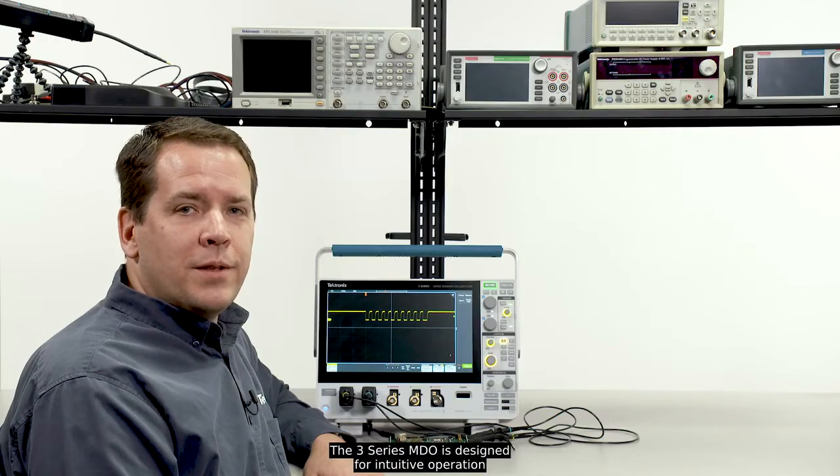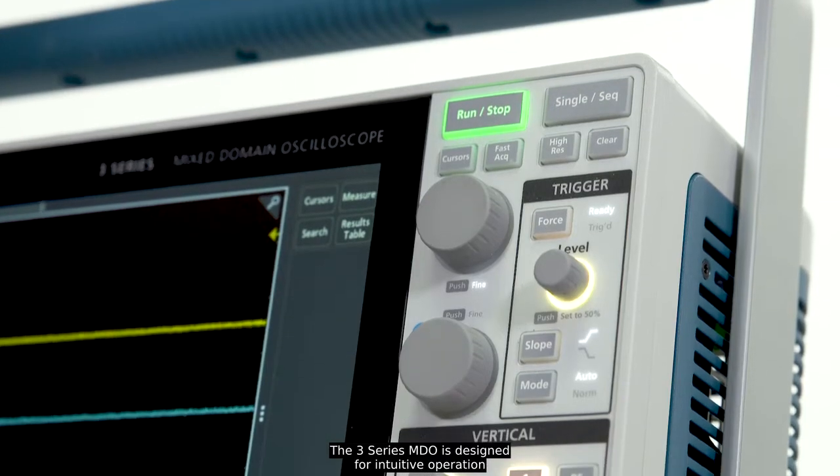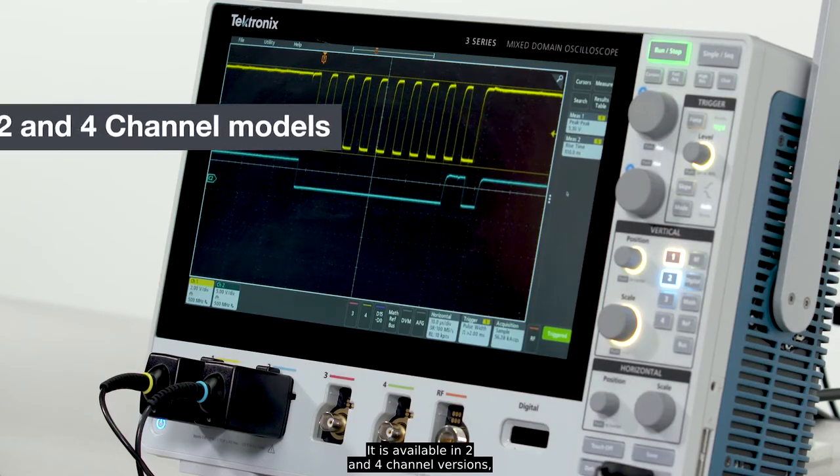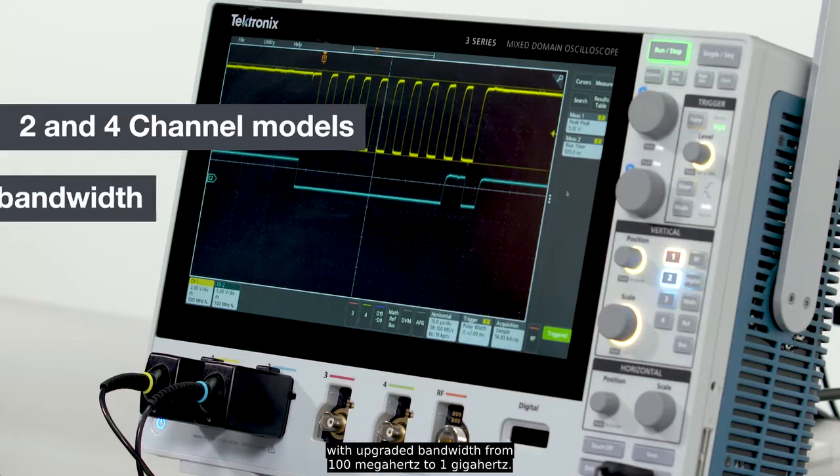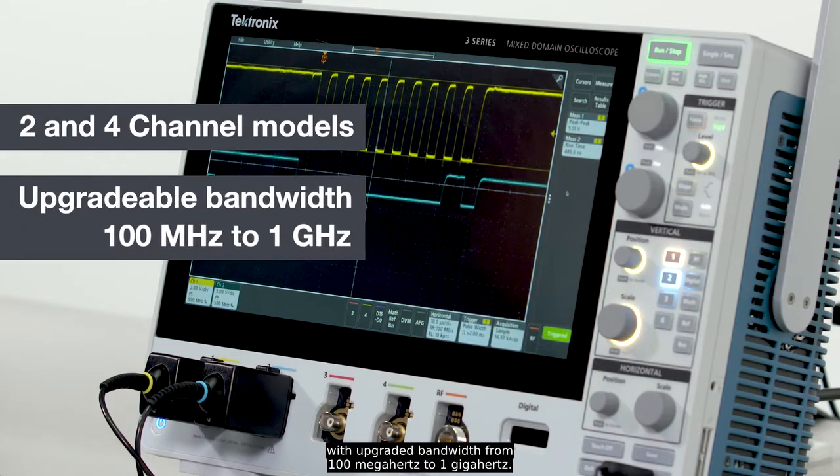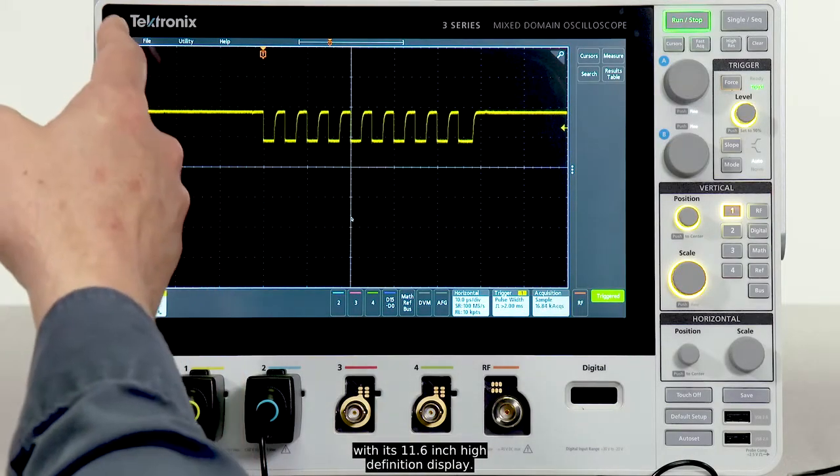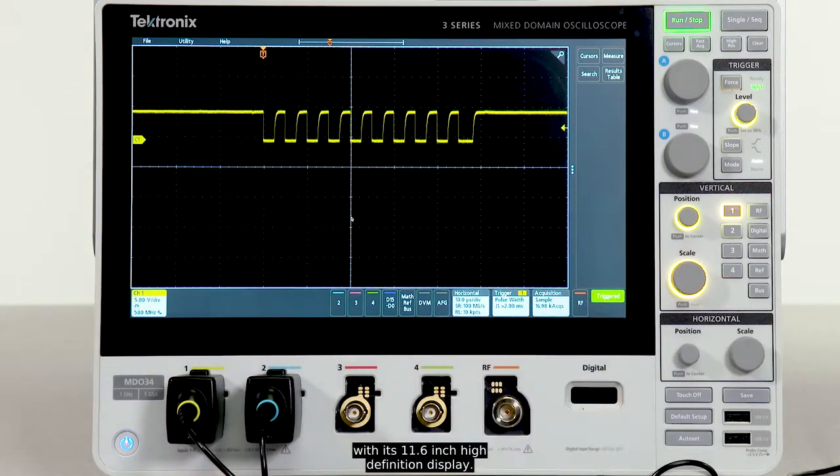The 3 Series MDO is designed for intuitive operation and fast insightful analysis. It is available in two and four channel versions with upgradable bandwidths from 100 megahertz to 1 gigahertz. The 3 Series emphasizes signal viewing area with its 11.6 inch high-definition display.